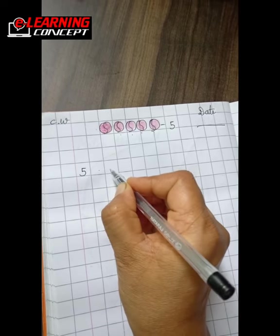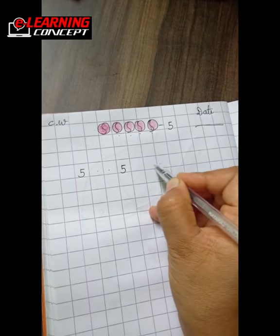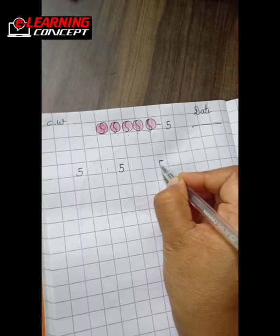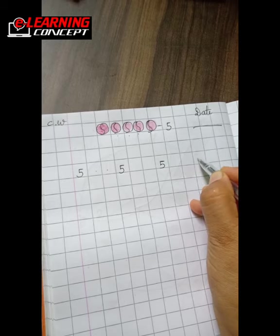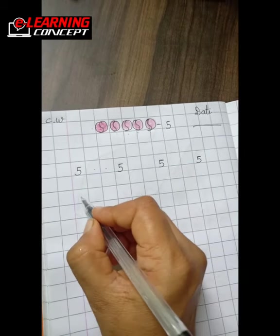Leave 2 boxes and again 5. Leave 2 boxes and again 5. Put dot in the boxes.